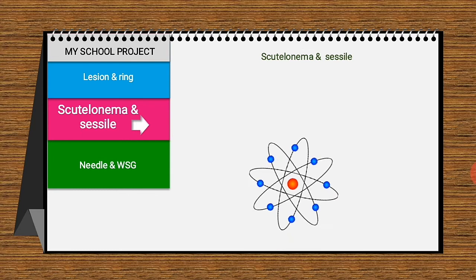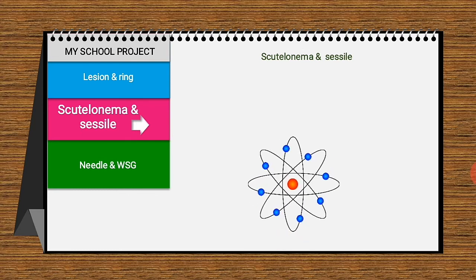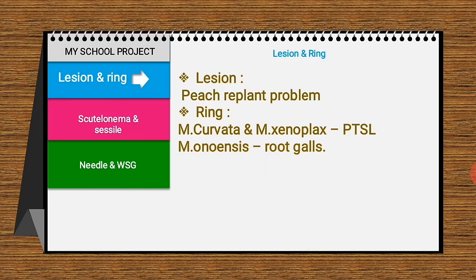Regarding ring nematode, the important nematodes are Mesocriconema curvata and Mesocriconema xenoplax, which cause peach tree short life. This disease is caused by the ring nematode in association with bacterial canker organism Pseudomonas, along with fluctuating winter temperature and pruning at the wrong time of year. The tree suddenly collapses shortly after leafing out, or prior to leafing out in spring.